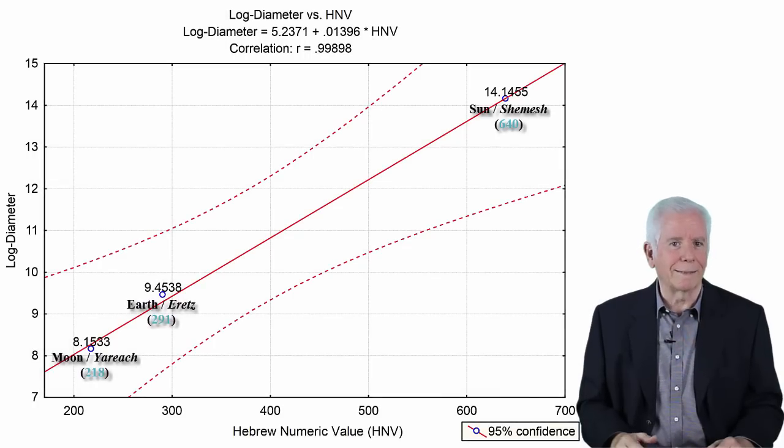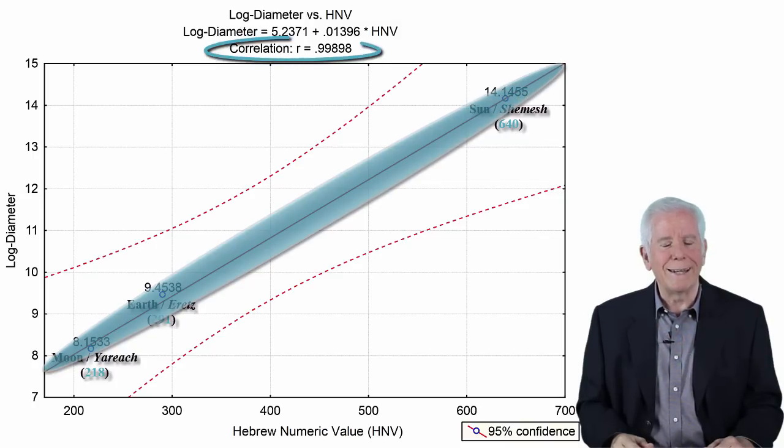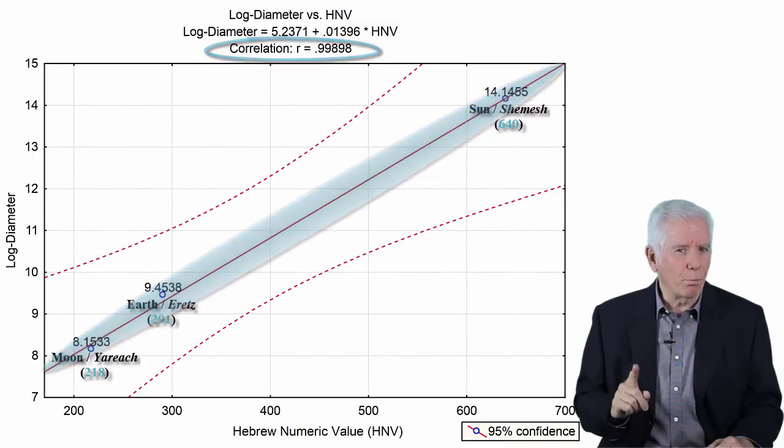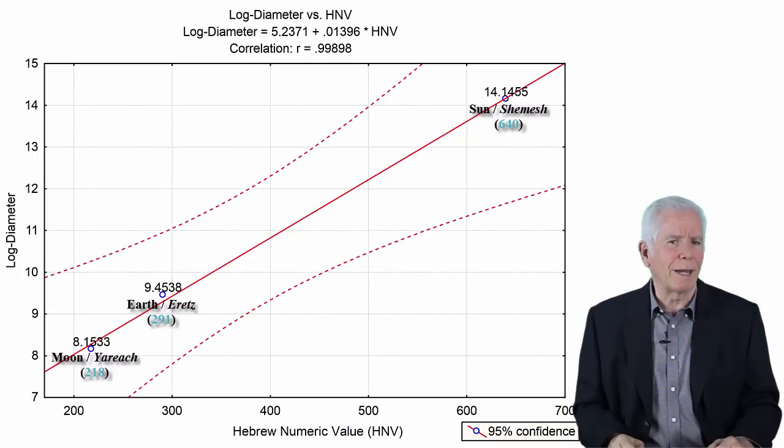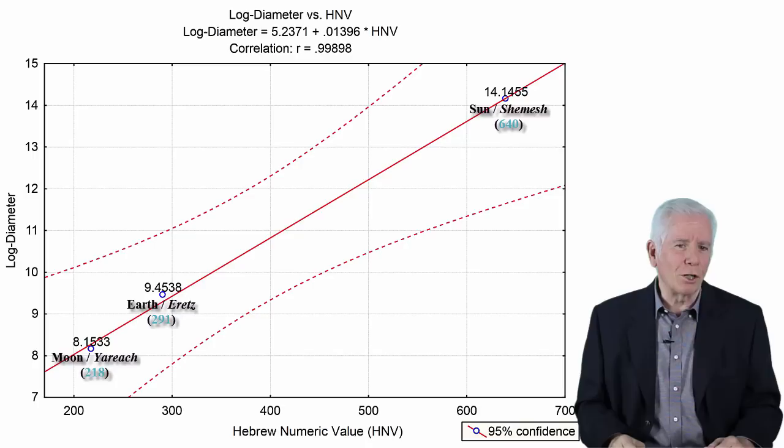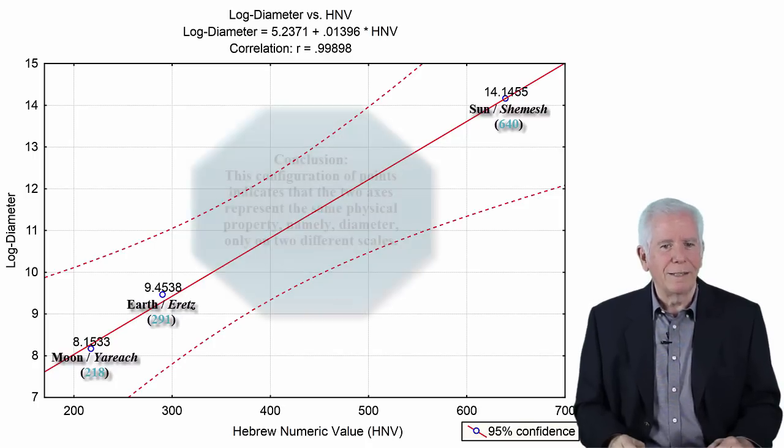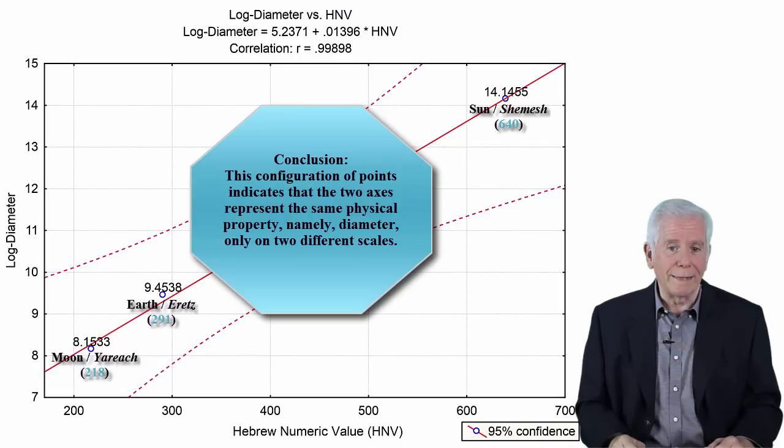This is indeed stunning. We realize that the points are aligned on a straight line with a linear correlation of 0.999. If the points were calculated from a mathematical equation of a straight line, we would have obtained a correlation of 1.000, and here 0.999. According to the general conclusion we have reached earlier, this configuration of points indicates that the two axes represent the same physical property, namely diameter.